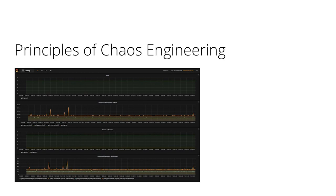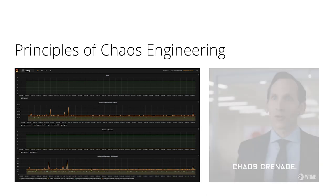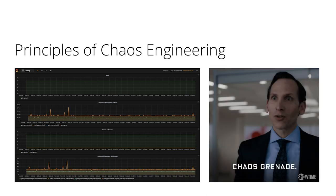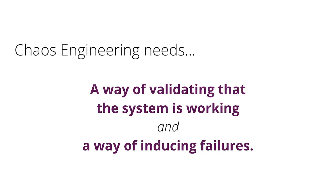I'm going to go back to this: have some monitoring, something in place that tells you if your system is working. Then you just introduce a chaos variable, try and break things. At its core, you need two things: a way of validating the system is working and a way of inducing failures.